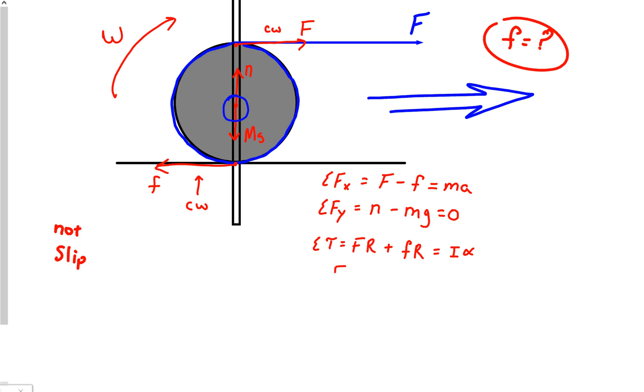So you should have a lot of intuition now. FR plus lowercase fR is equal to, it's a solid cylinder. I'm getting sick of the solid cylinders. We need some hollow things, maybe a sphere even, but anyway, that would be one-half MR squared. Again, we know, I hope you know by now, that A is equal to R alpha. So A over R.